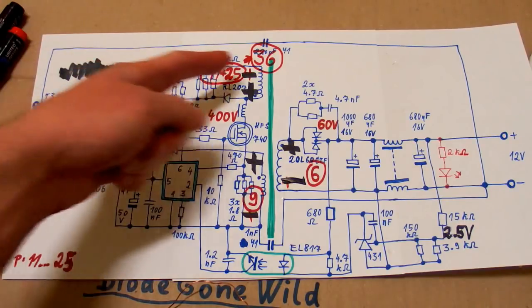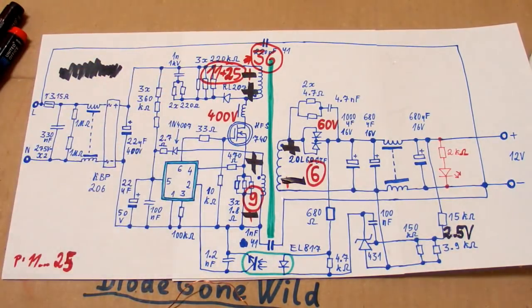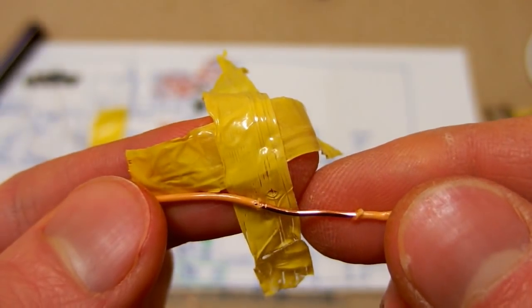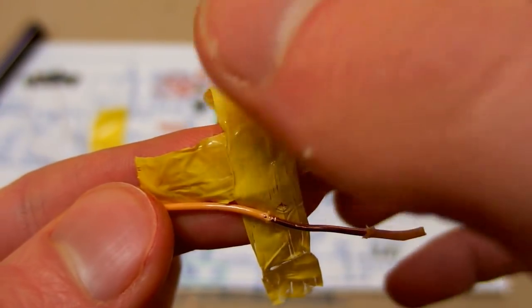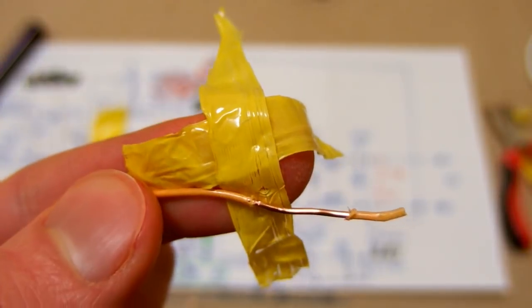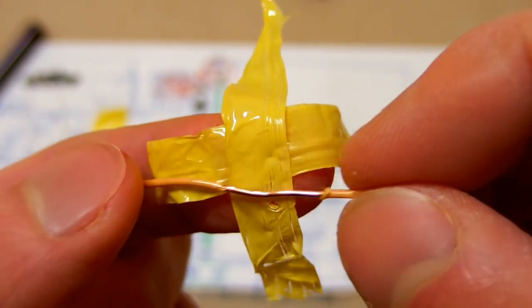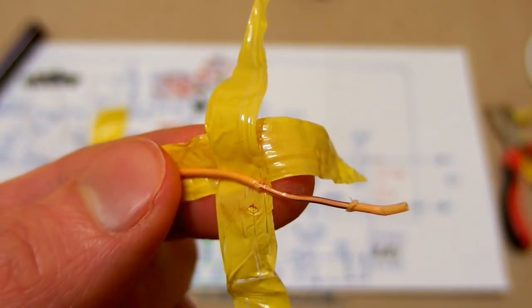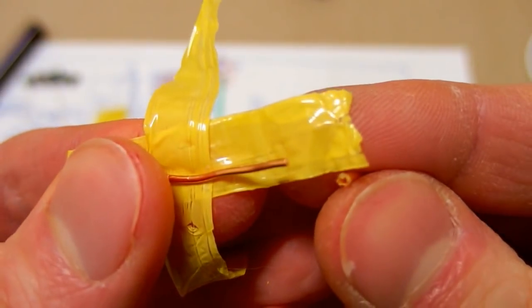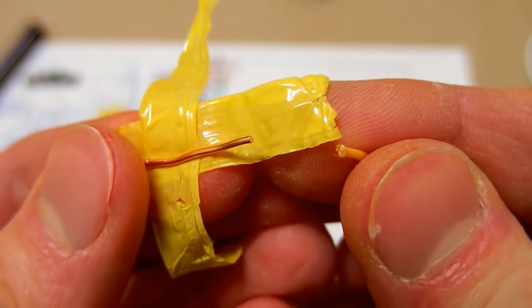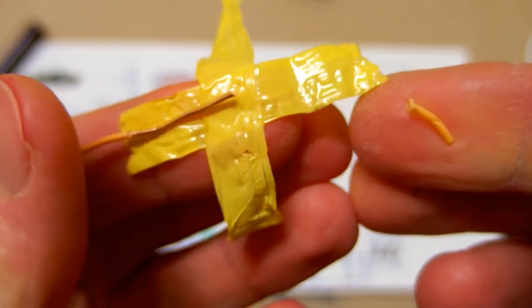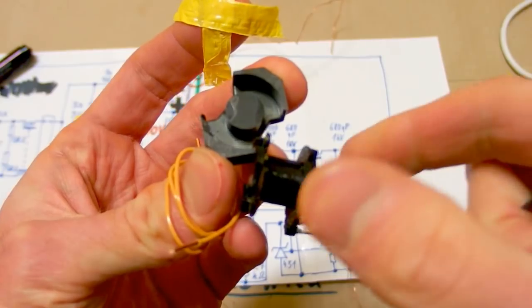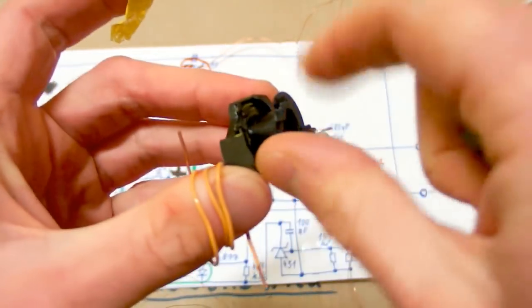So here you can see the numbers of turns. The isolation between the primary and secondary is two layers of sticky tape. But on top of it there is thick isolation on the secondary, which makes it much safer. So this transformer looks quite safe.